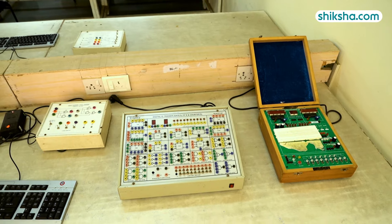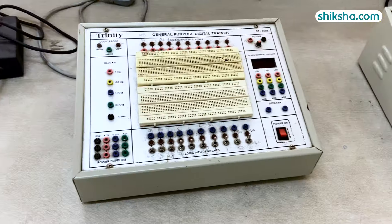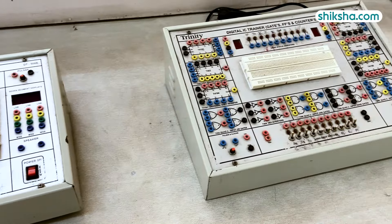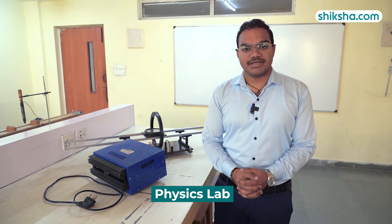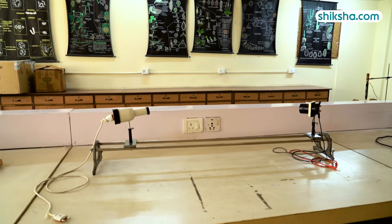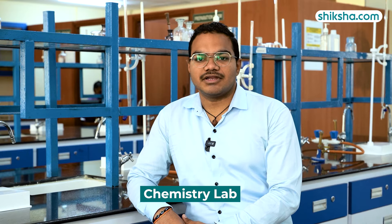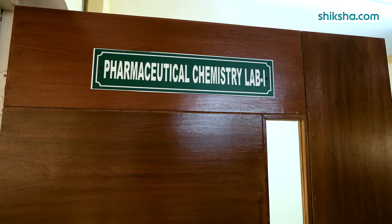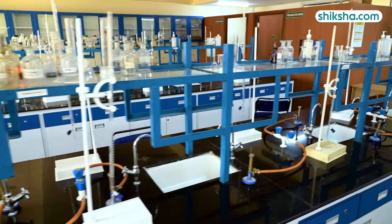This is the microprocessor systems and digital electronics lab for students of CSE, EEE and ECE. In this lab students study digital electronics and microprocessor systems. A major part of the curriculum for first year students is physics and chemistry. This is the physics lab for first year students irrespective of their field. Chemistry is also an integral part of the curriculum, and here students get practical exposure to chemistry and chemicals.